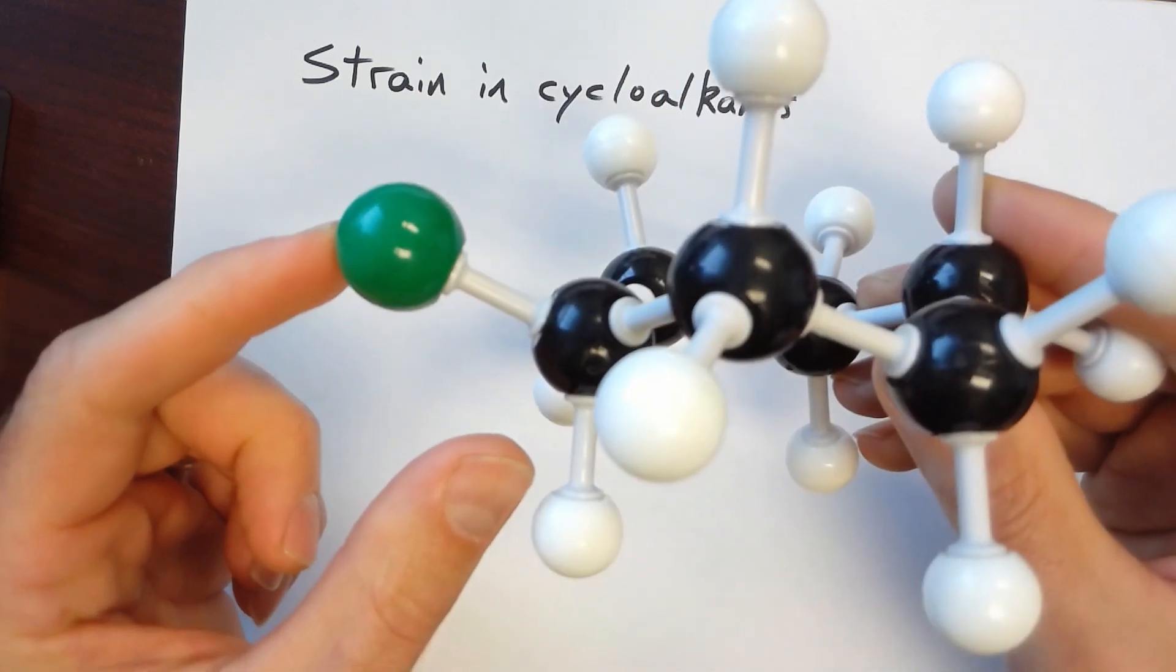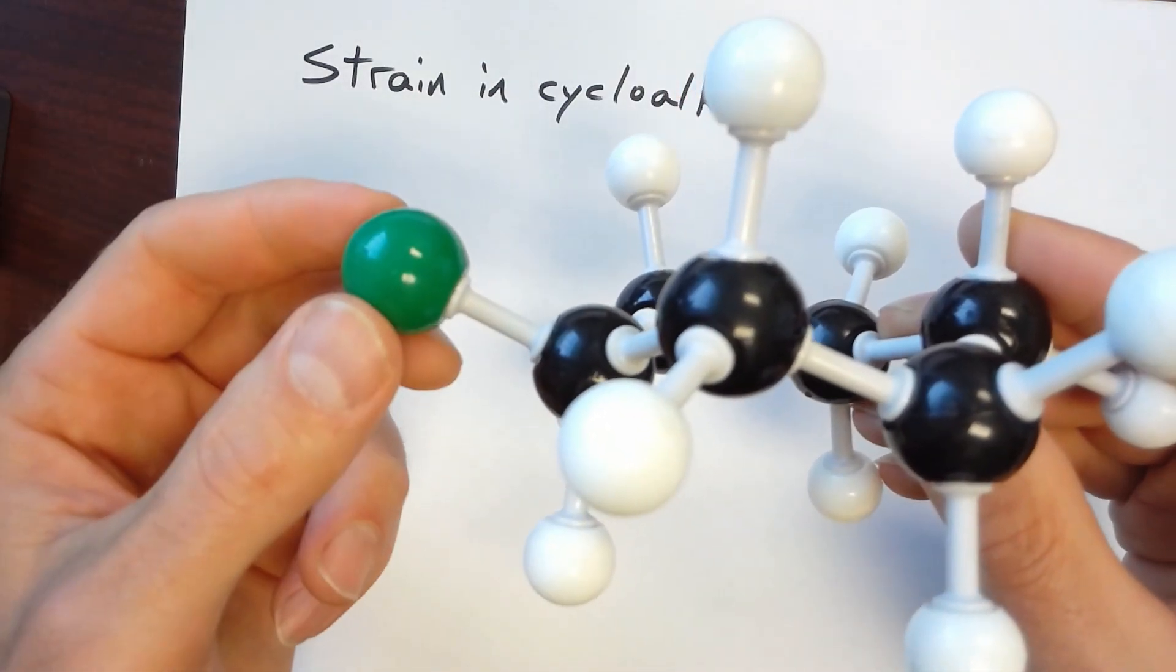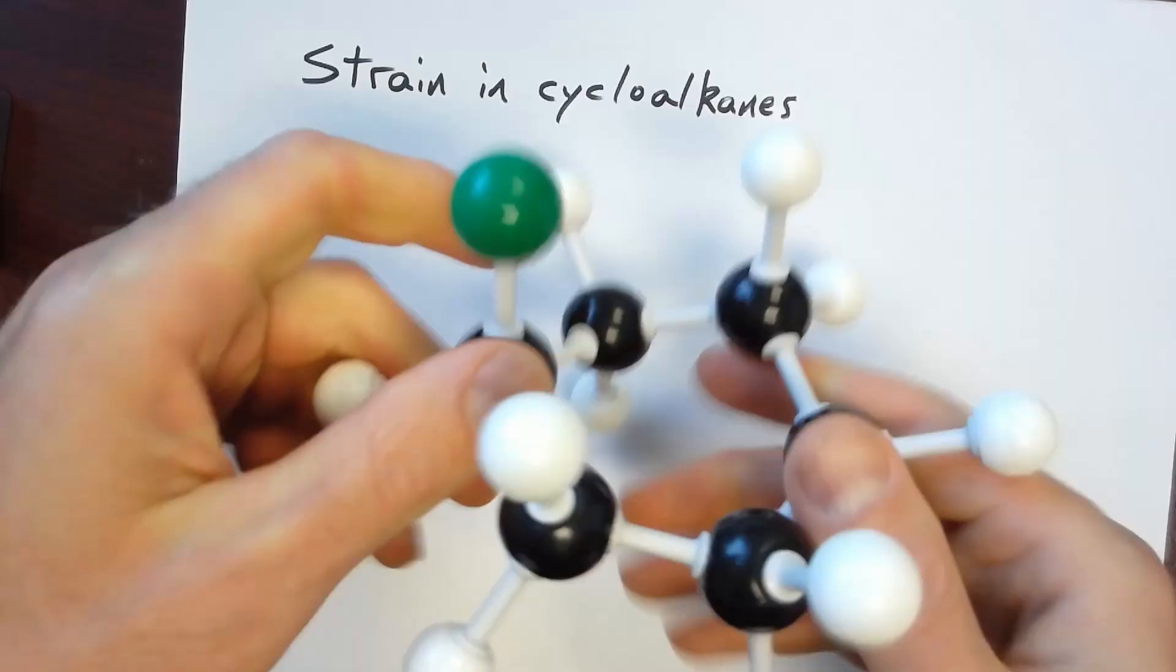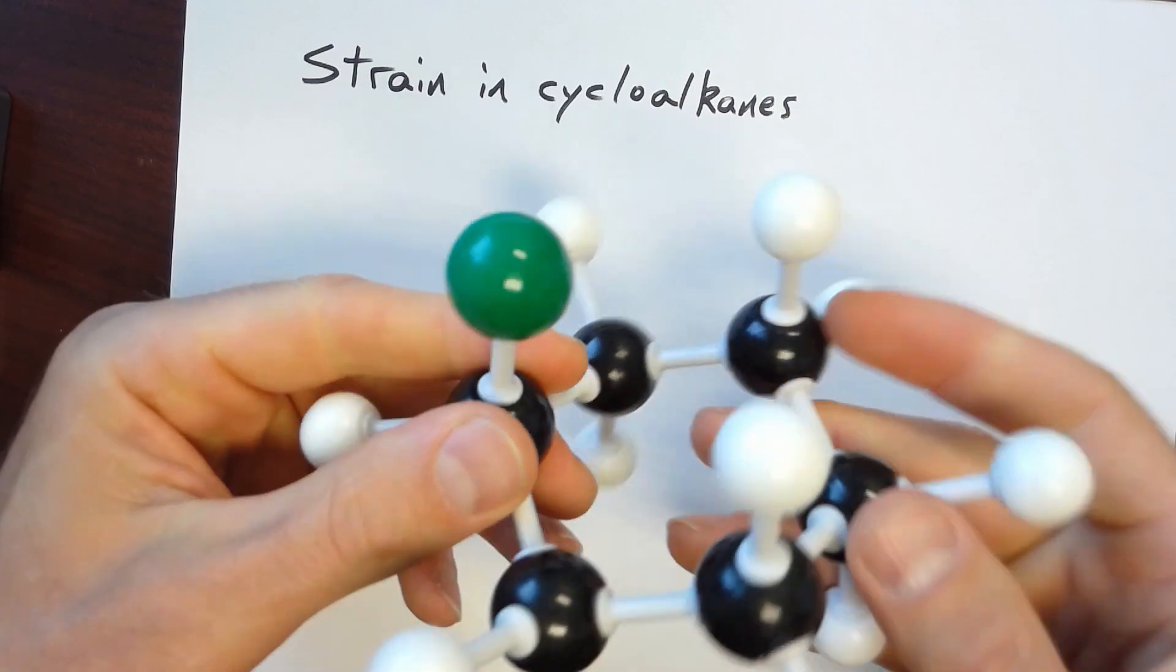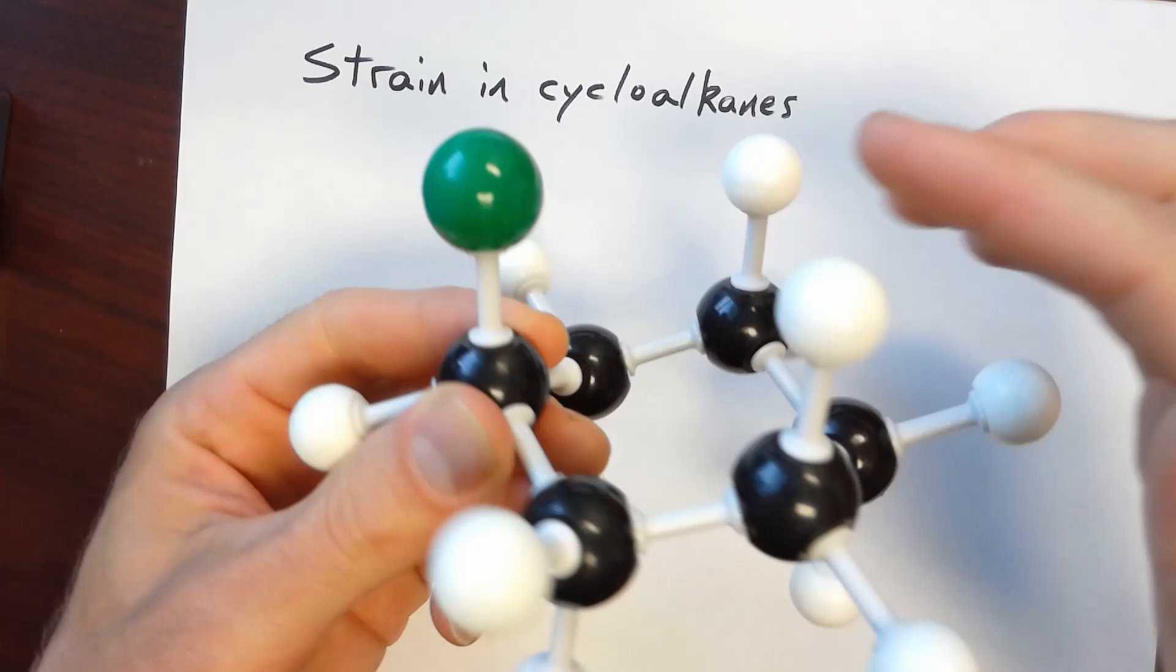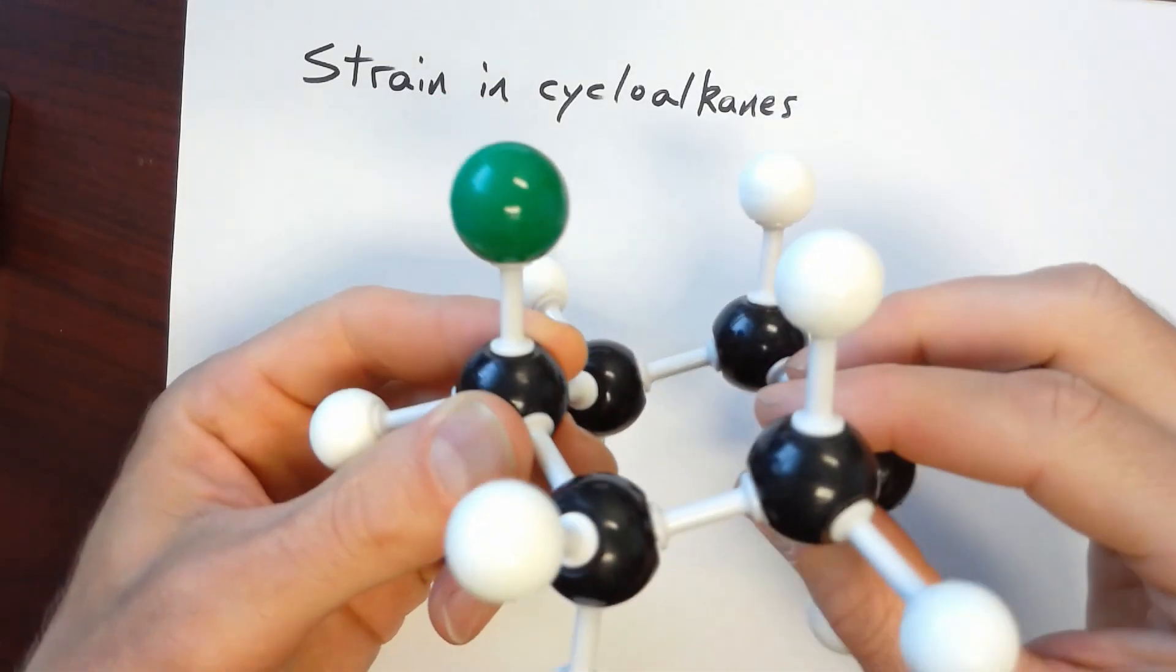So when it's in an equatorial position, notice that the chlorine has more space. And so when we put it back up into the axial position, notice that this chlorine is in closer proximity to these two hydrogens right here, which are both axial hydrogens.